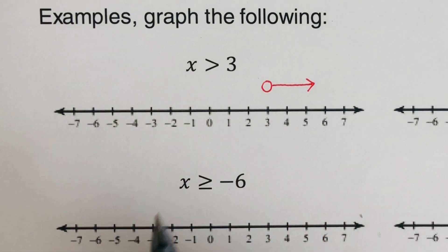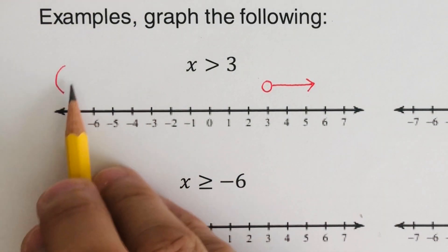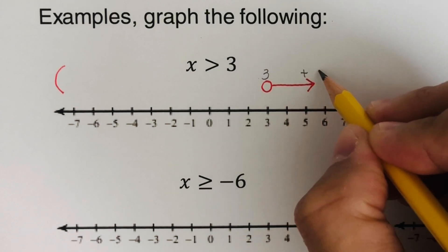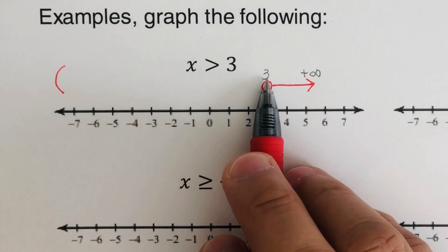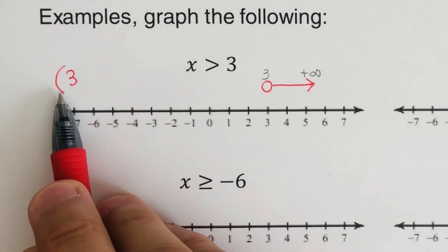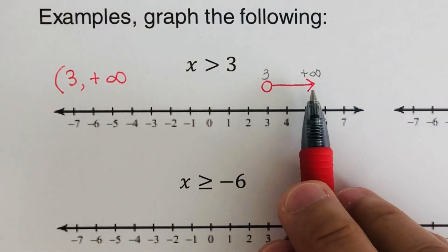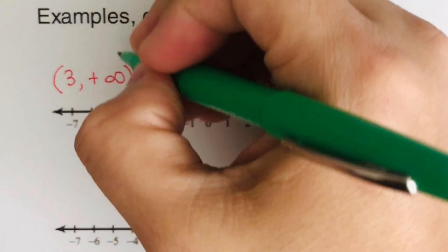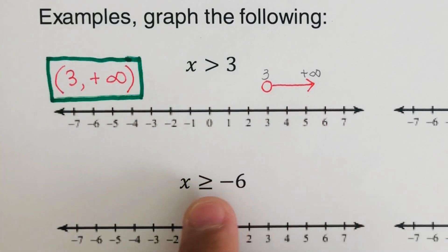If we want to write the solution in interval notation, we write parentheses on 3, since that is an open circle, and then it goes all the way to positive infinity. We use a parenthesis for infinity as well, since it does not end. So the interval notation is (3, +∞), and that is our solution in both graph form and interval notation.